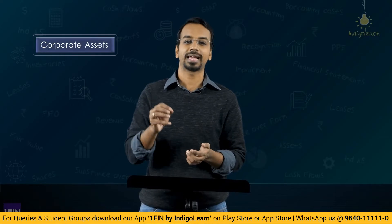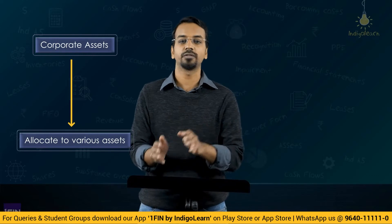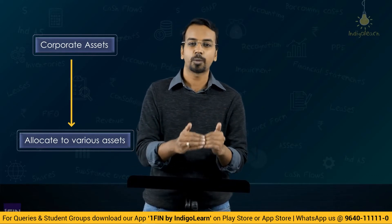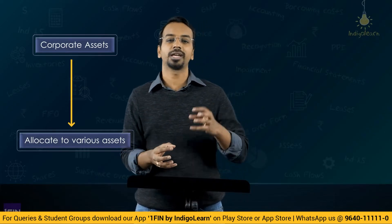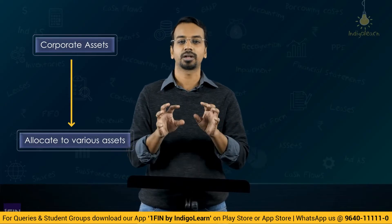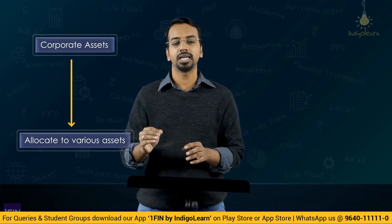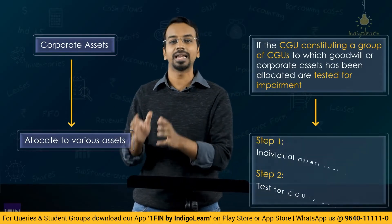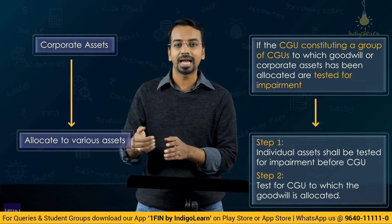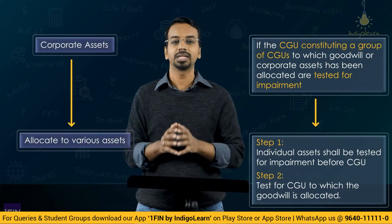Corporate assets do not generate cash flows independently — they are more like a support system for remaining assets. Because corporate assets do not generate cash flows independently, you will have to allocate corporate assets to the various other assets or cash generating units, and including the corporate assets, you will test them for impairment. Whenever allocating goodwill or corporate assets and testing CGUs for impairment, you will first test whether individual assets within those CGUs are impaired, and after that, impairment testing happens at the cash generating unit level.